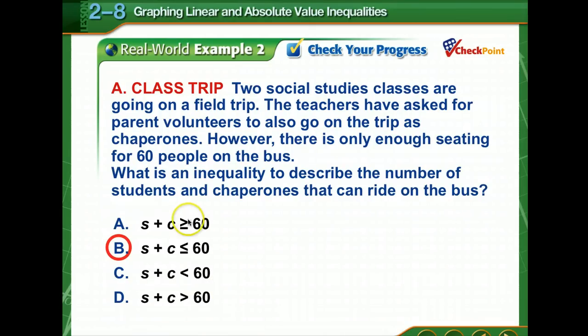So we're writing our inequality. The students plus chaperones have to be less than or equal to 60 because this bus only has enough seating for 60. So we can't have it greater than 60, so we're only looking at these two at most, but it could also equal 60. We can get 60 people on that bus.